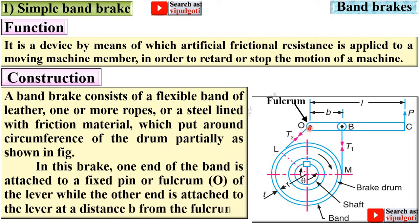In this brake, one end of the band is attached to a fixed pin, or you can say the fulcrum of the lever, while the other end is attached to the lever at a distance b from the fulcrum. So keep in mind that in the simple band brake, one end of the band is attached to the fulcrum and the other end is at a certain distance on the lever from the fulcrum.